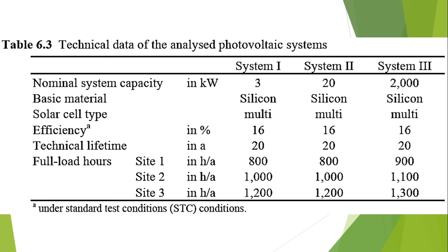Under current technical boundary conditions, full load hours of the analyzed systems amount to approximately 800 hours per year for sites in north to central Europe, approximately 1000 hours per year for sites in central to south Europe, and approximately 1200 hours per year for promising sites in southern Europe to northern Africa. The lifetime of the solar modules is estimated to be around 30 to 40 years. The technical data of these reference plants is given in the table for system one, system two, and system three.